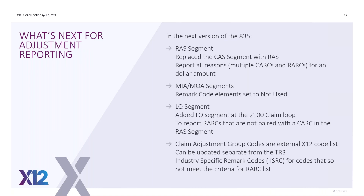I wanted to give you a quick snapshot of what you can expect in the next version of the 835. There's a new segment called the RAS — it will replace the CAS. It will start with a dollar amount and allow you to give all of the reasons, with reasons having their own group codes. So now instead of being based on a group code responsibility, it's focusing on a dollar amount and all of the reasons associated to that amount. There are also changes to reporting of remark codes to be more consistent. Group codes will be external, and there will be one more remark code list called the IISRC — industry-specific remark codes — for remarks that did not qualify for the actual work list.